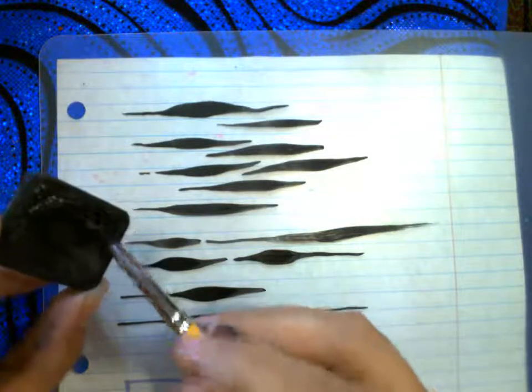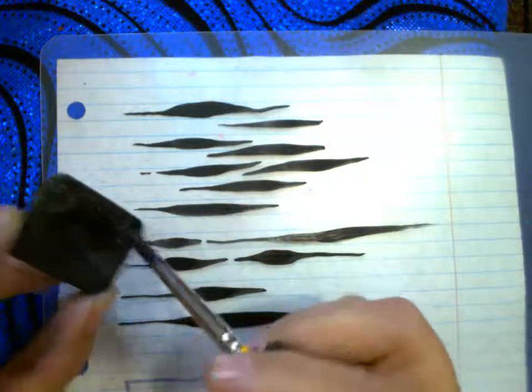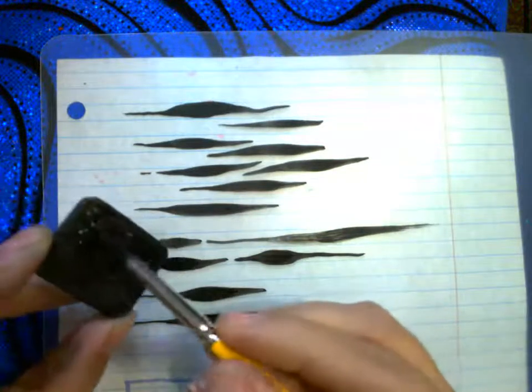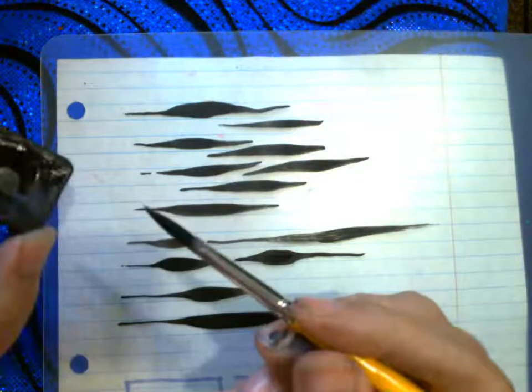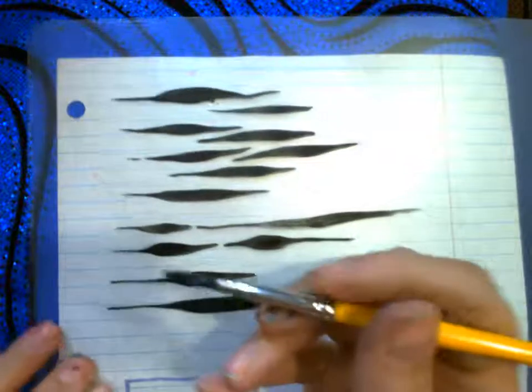But a poor brush will fail no matter how much you try to twist it and teach it to go into a point. Your brush needs to already have a point.